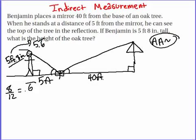Now, in similar triangles, I know that the proportions, the measurements of the sides are proportional. So I can do 5.6, which is the height of Benjamin, over the 5 feet that he is away from the mirror. So that one side is equal to, what side corresponds to the height of Benjamin? Well, that would be the height of the tree.